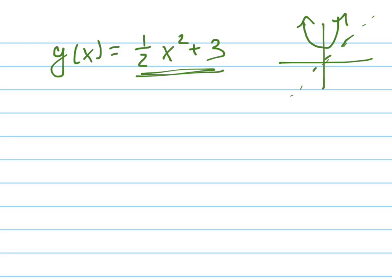So if I flip that parabola over the line y equals x, which is, by the way, another way to do an inverse, is you graph it and you flip it over the line y equals x, is that going to pass the vertical line test? No. So I know the inverse isn't a function.